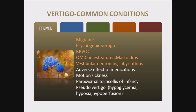The most common vertigo conditions seen in children — the conditions most commonly seen in my practice — are migraine, psychogenic vertigo, BPVOC, otitis media, cholesteatoma, mastoiditis, vestibular neuronitis, labyrinthitis, adverse effects of medications, motion sickness, paroxysmal torticollis of infancy, and pseudo-vertigo conditions like hypoglycemia, hypoxia, and hypoperfusion.